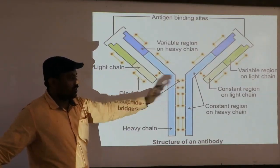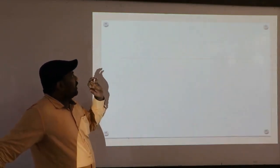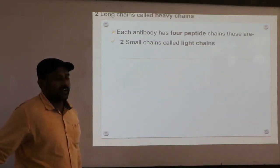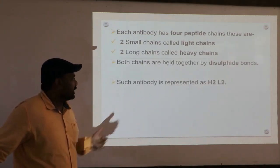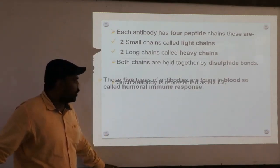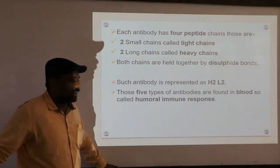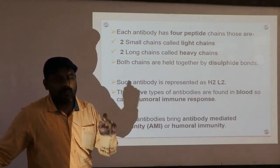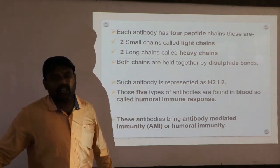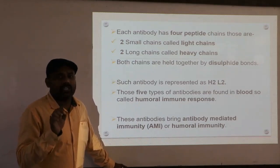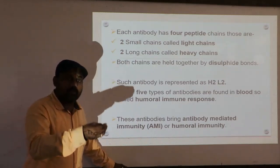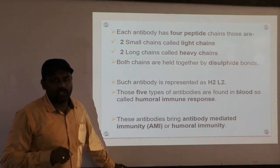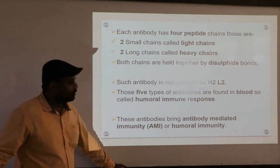Each antibody has four peptide chains — two light chains and two heavy chains — held together by disulfide bonds, represented as H2L2. There are five types of antibodies found in the blood, hence they generate humoral immune response. These antibodies bring about antibody-mediated immunity, or AMI. B-lymphocytes never directly kill the antigen; instead they kill it by producing antibodies — hence it is called antibody-mediated immunity or humoral immunity.